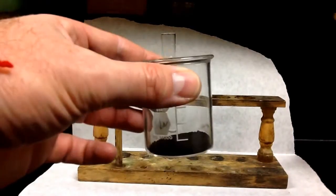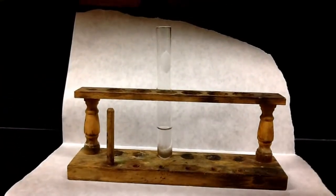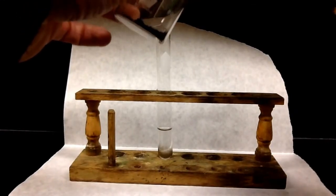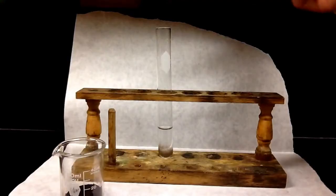This is some manganese dioxide. It's going to be a catalyst in this reaction, so it's actually not going to get used up. It just helps the hydrogen peroxide break down a little bit faster.